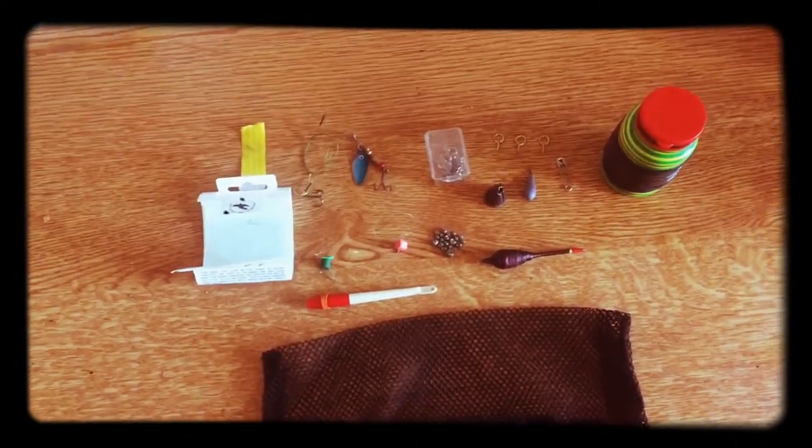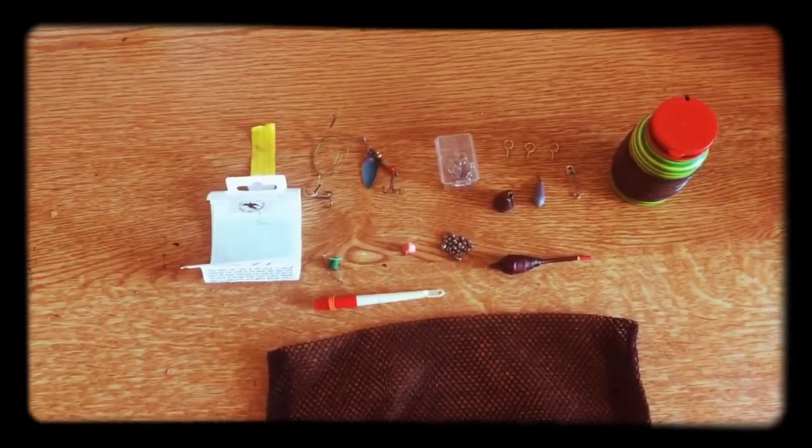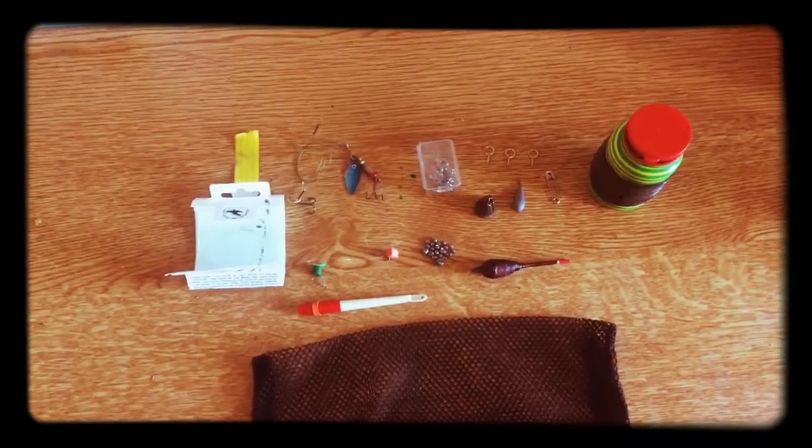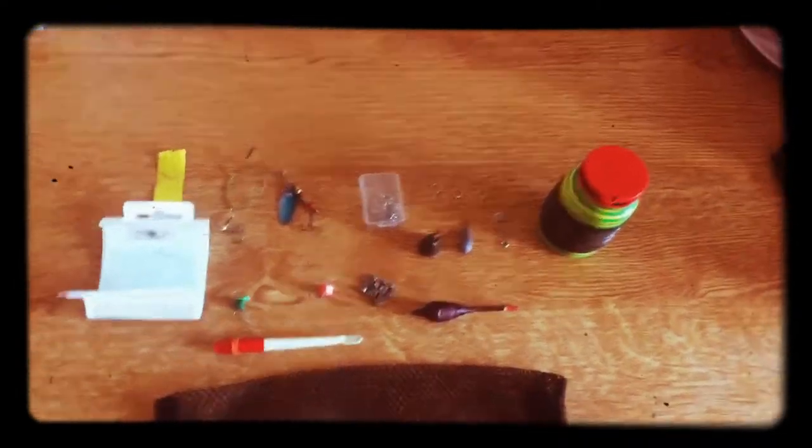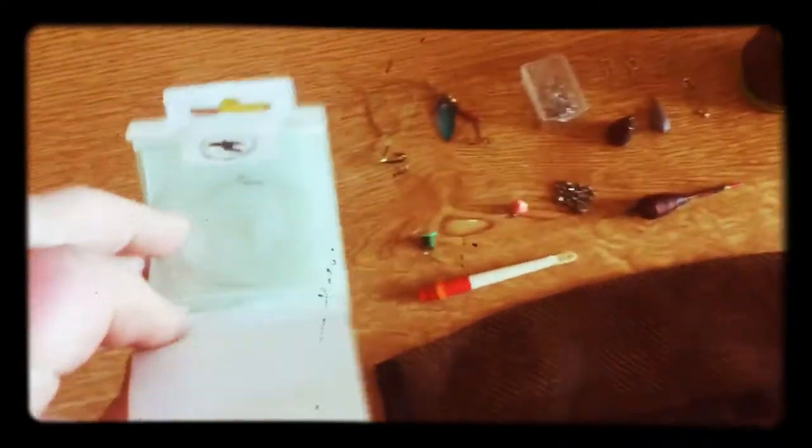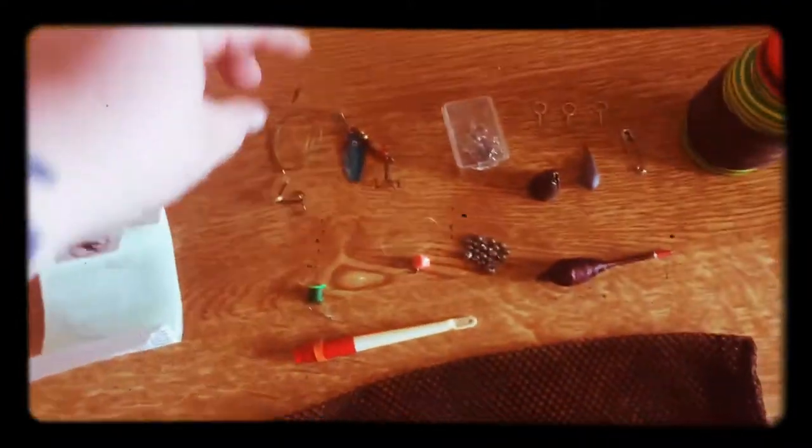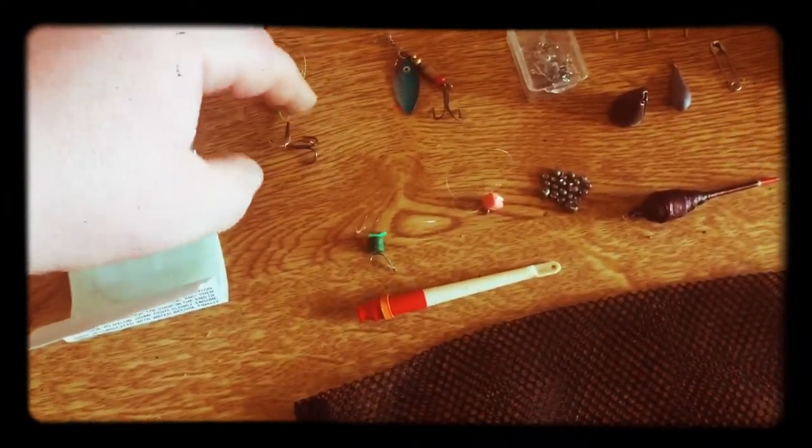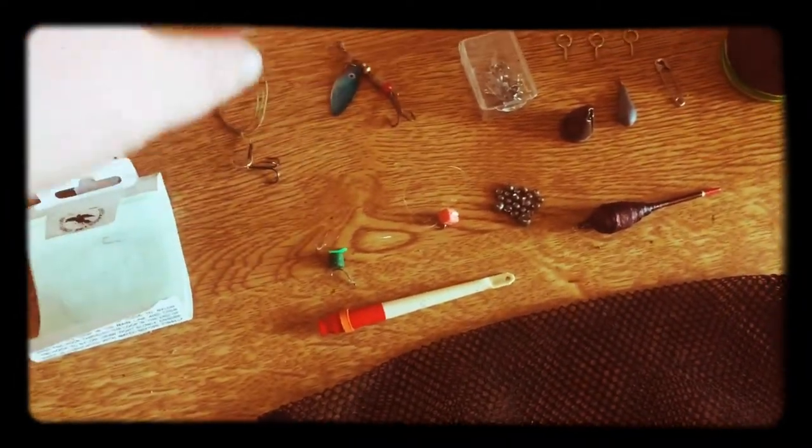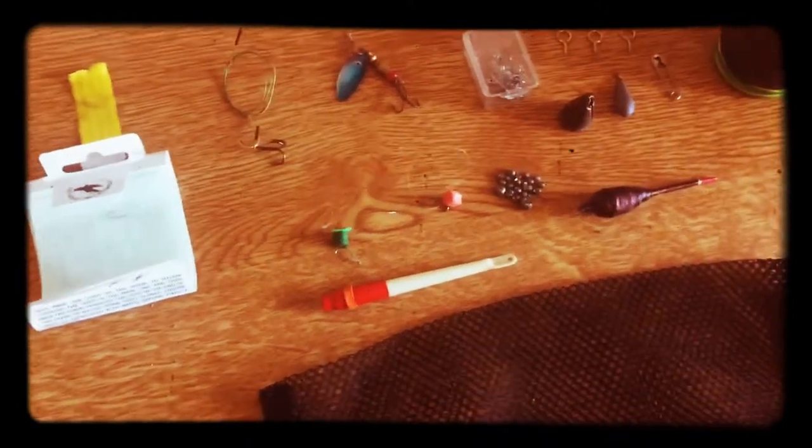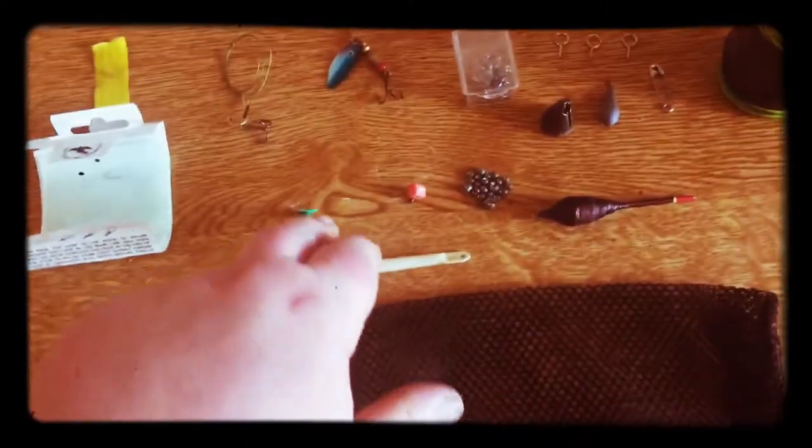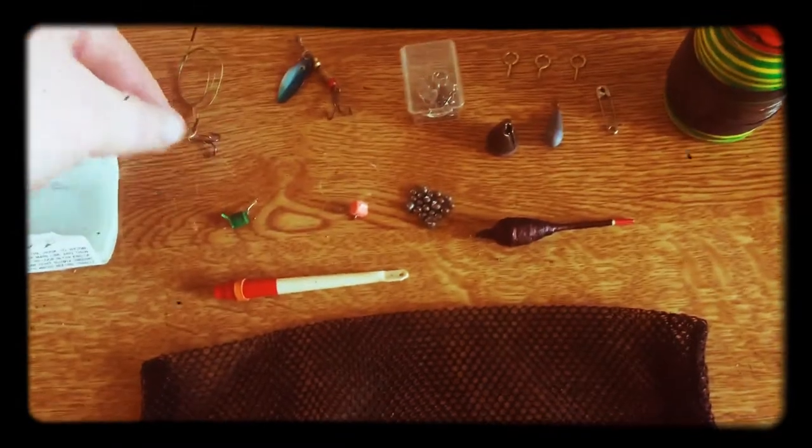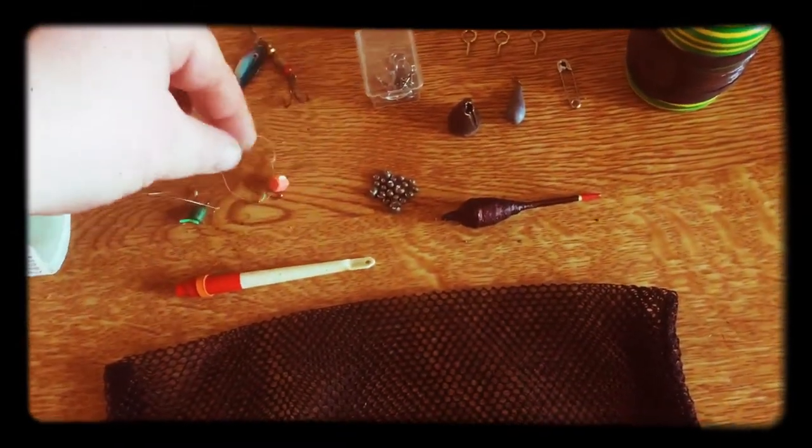Basically you've got some size 16 hooks tied to nylon already, a wire trace with a couple of trebles and a single hook for debate, a small spinner for trout, small pike, or maybe perch, and some fake floating baits tied to nylon hooks already.